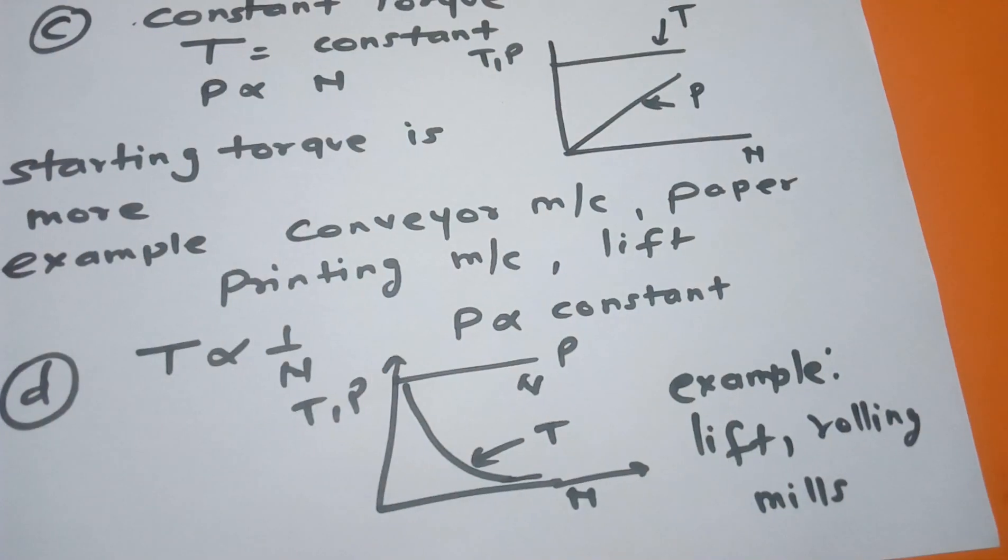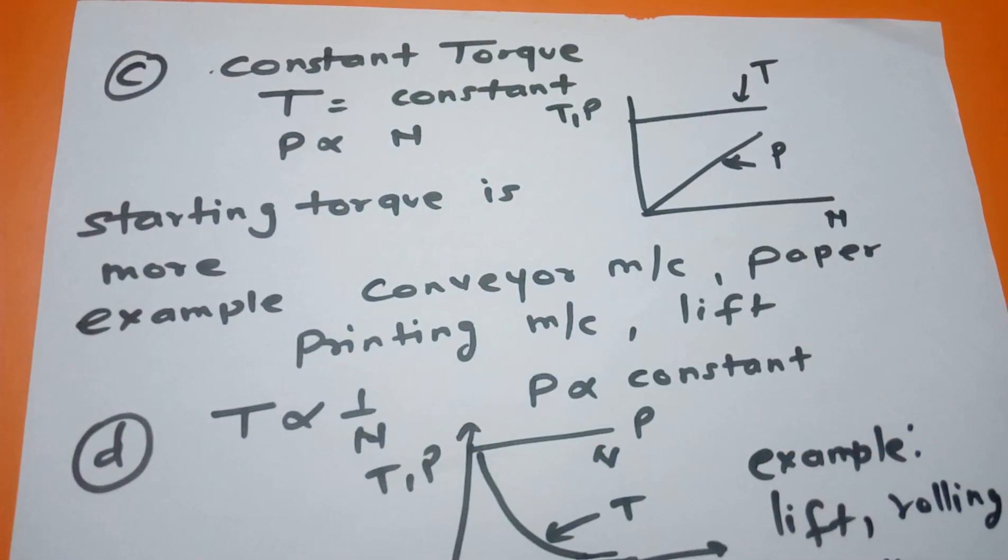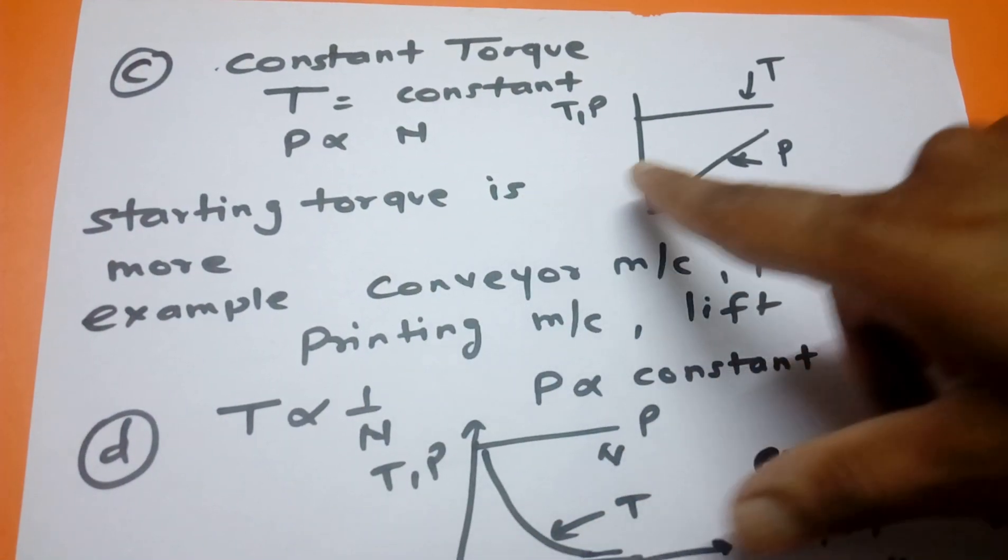When speed is increased proportionally, torque also increases. Such type of examples are mixers and strutters.